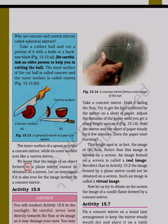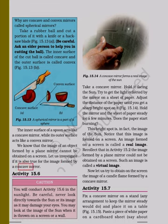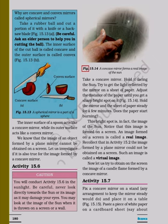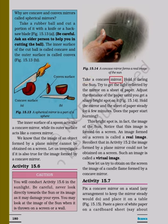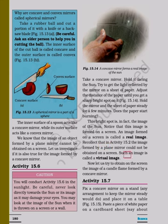We know that the image of an object formed by a plane mirror cannot be obtained on a screen. Let us investigate if it is also true for the image formed by a concave mirror. Activity 15.6: Take a concave mirror. Hold it facing the sun. Try to get the light reflected by the mirror on a sheet of paper. Adjust the distance of the paper until you get a sharp bright spot on it. Hold the mirror and the sheet of paper steady for a few minutes. Does the paper start burning? This bright spot is, in fact, the image of the sun. Notice that this image is formed on a screen. An image formed on a screen is called a real image. The image formed by a plane mirror could not be obtained on a screen - such an image is called a virtual image.